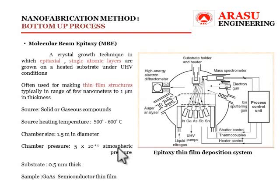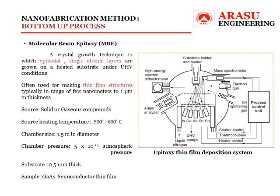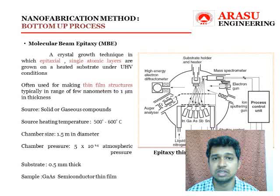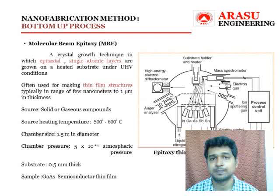An electron gun directs electrons at the sample, collected in the reflection high energy electron diffractometer, providing details about thin film thickness and crystal structure. A mass spectrometer measures the mass-to-volume ratio of deposited chemical components. An Auger analysis spectrometer measures the in-depth structural arrangement of the substrate. A liquid nitrogen coolant maintains the operating temperature. The complete process occurs at ultra-high vacuum at around 5 × 10⁻¹⁴ atmospheric pressure. The chamber is typically 1.5 meters in diameter, and this technique develops thin films typically from a few nanometers to one micrometer in thickness.